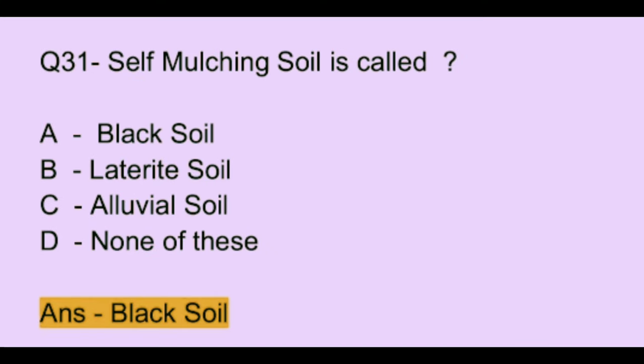Question number 31. Self-mulching soil is called: Option A: black soil. Option B: laterite soil. Option C: alluvial soil. Option D: none of the above. The correct answer is option A, which is black soil.